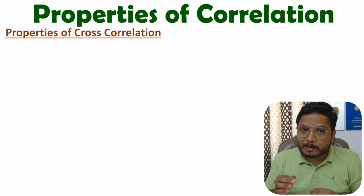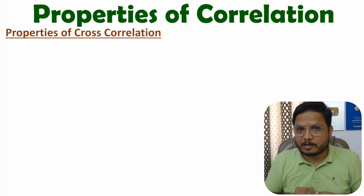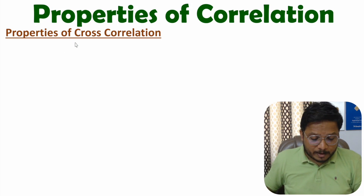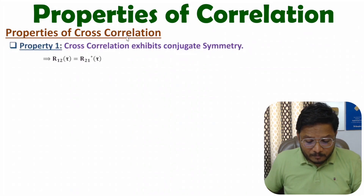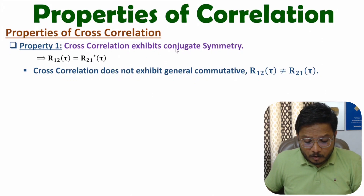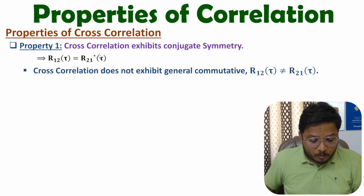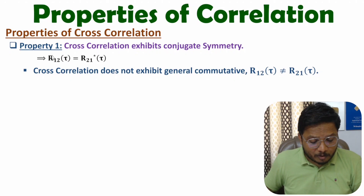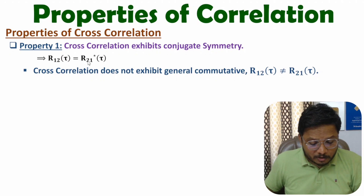First, let me discuss the properties of cross correlation. The first property is based on conjugate symmetry — cross correlation exhibits conjugate symmetry. If you have cross correlation of signal 1 with respect to signal 2, then R₁₂(τ) equals R₂₁(τ) conjugate.